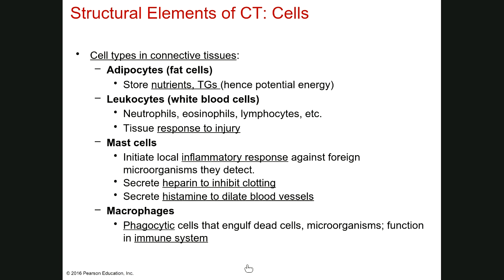Let's talk more about some of the cells you find in connective tissue. Adipocytes, the cell type found in adipose, store nutrients — specifically triglycerides. This is potential energy storage because triglycerides can be broken down and the chemical bonds release energy.